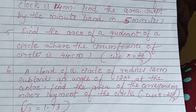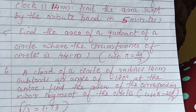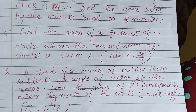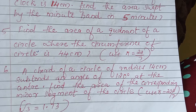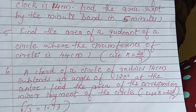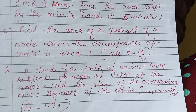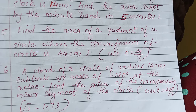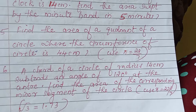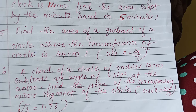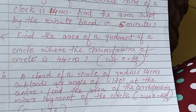Next question: a quadrant of a circle of radius 14 cm subtends an angle of 120 degrees at the center. Find the area of the corresponding minor segment of the circle. Here, root 3 = 1.73 and use pi = 22/7.